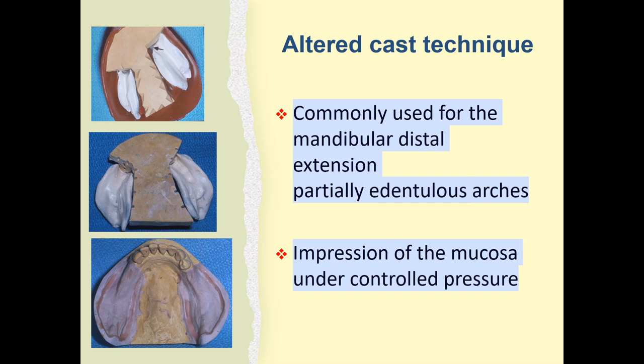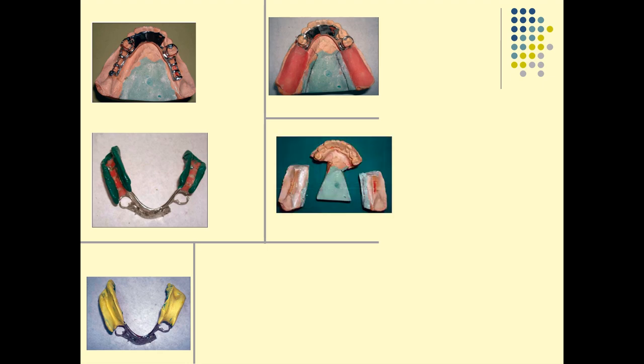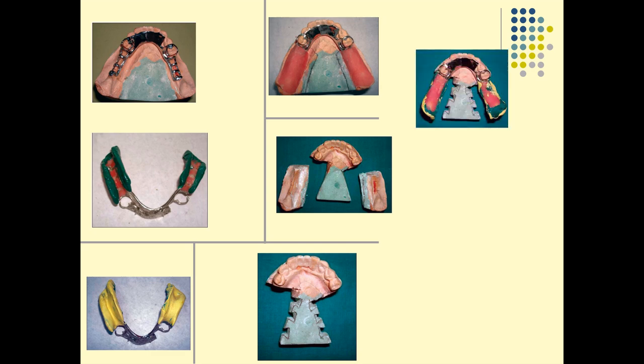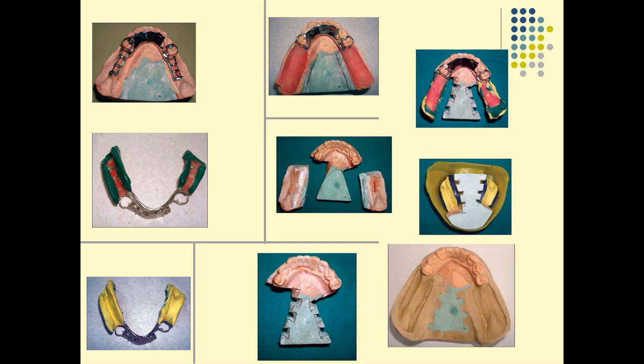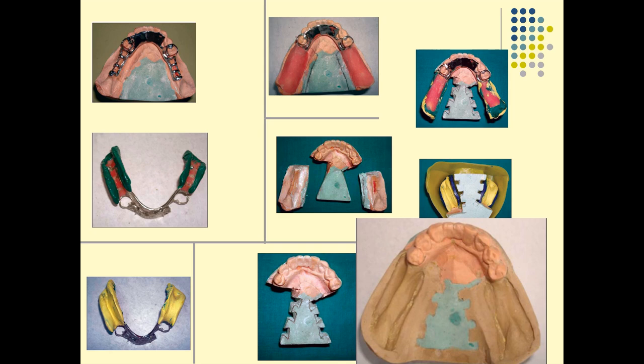In the altered cast impression technique, an impression of the mucosa is made under controlled pressure. This is highly recommended to capture details of the buccal, lingual, and labial contours of the residual tissue, helping to accurately develop the contours of the final prosthesis. The steps involve attaching an acrylic resin custom tray to the mandibular metal framework after verifying the framework fit, performing border molding, recording the final impression, then splitting the cast and adapting the framework with the final impression onto the split cast to obtain the altered cast. This technique is also called the split cast or corrected cast technique, and is a modification of functional impression through a laboratory procedure.